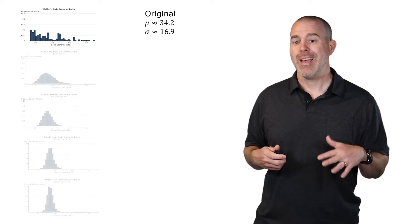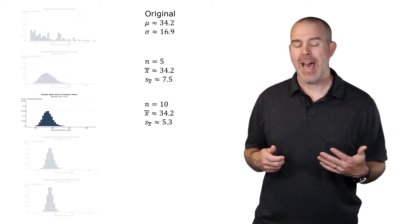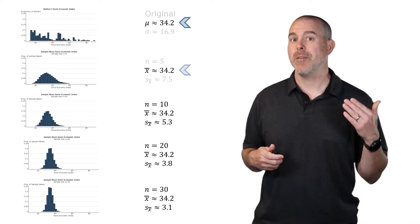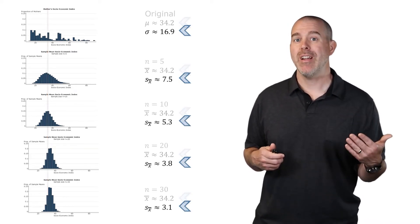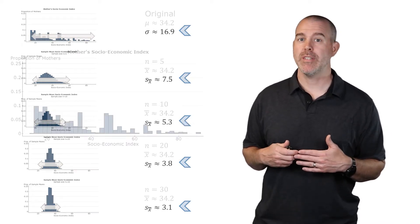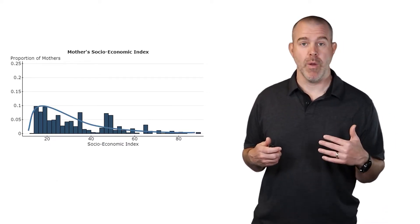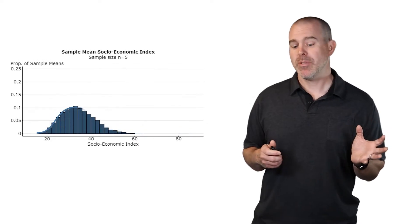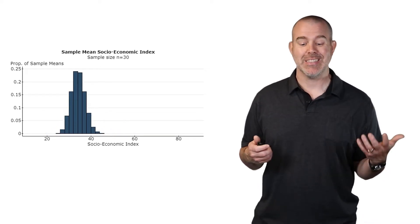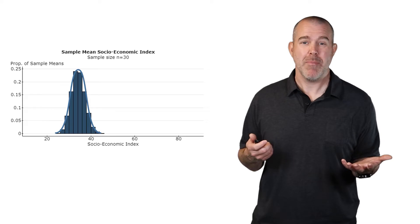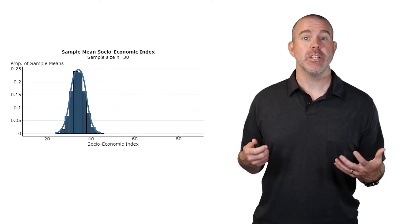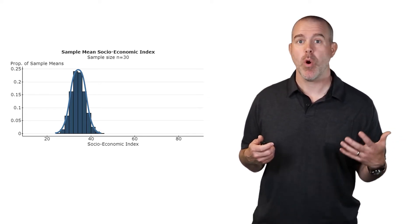If we put them all up here, kind of compare the original 34.2, 16.9, then we have the other three or four different sample sizes. You can see the trend here is that the means are all the same, they're all 34.2, but the standard deviation is getting smaller and smaller as the sample size increases. What about the distribution shape? For the mothers, very skewed right. For sample size 5, still skewed right, becoming more bell-shaped. Size 10, then 20, and then 30. This is pretty bell-shaped by the time you get to a sample of size 30. That is a huge result. As the sample size increases, the distribution becomes more symmetric, more bell-shaped.